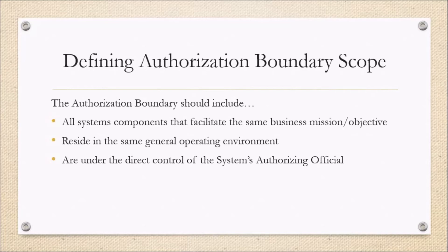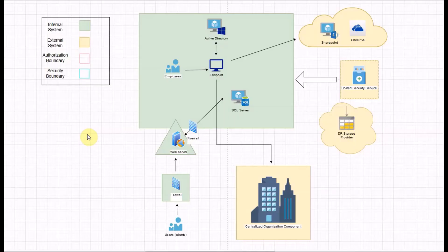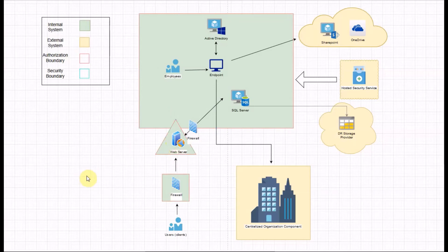Let's move over to our sample information system and take a look at how we incorporate things into our authorization boundary. Last episode we took the time to classify these components as either internal or external to the information system based on who exercises control. Now that we've discussed the authorization boundary and NIST's guidance that information system boundary and authorization boundary are synonymous terms, we can pretty easily classify what's going to be internal to our authorization boundary — and that's these internal systems. Remember, there's an authorizing official — a designated person — who's given the okay for this system to operate, saying that it's an acceptable level of risk, and because of that they want to have total understanding of the authorized environment.